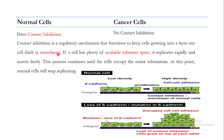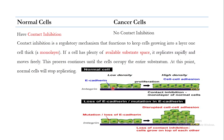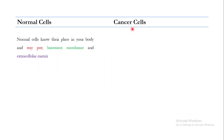Normal cells have specialized proteins known as E-cadherins. Because of E-cadherins, when cells proliferate or divide, they grow in a monolayer. When there is loss of E-cadherins or mutation in these E-cadherin proteins, cancer cells grow in multiple layers, piling on top of each other as seen in the images. In most cancer cells, there is loss of function or mutation of E-cadherins, so contact inhibition is not followed.